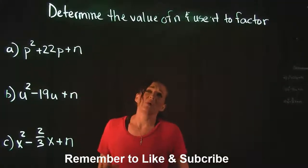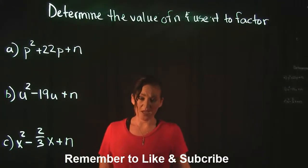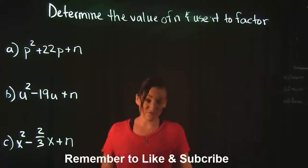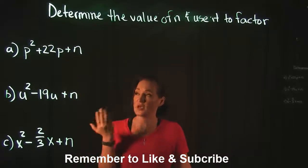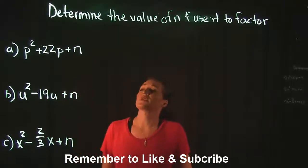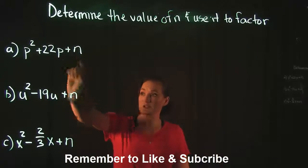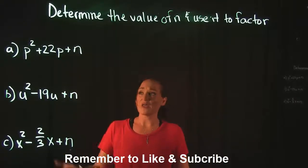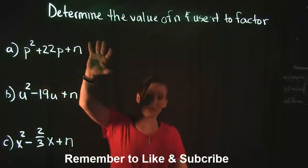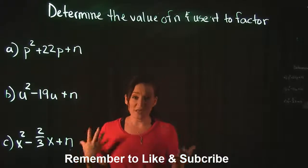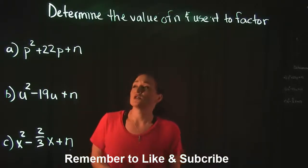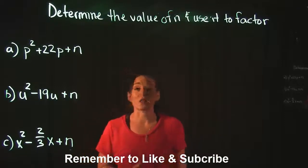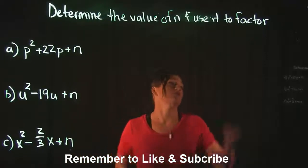Let's talk about a couple of problems on how we determine the value of n and then use that to factor the perfect square trinomial. Here we have three different examples, and this is essentially a two-step type of problem. They want us to find n first, the third term in the trinomial, and then after we've completed our trinomial, we need to factor it. So this is how you determine the value of n. There's a little mini formula that you do have to use.